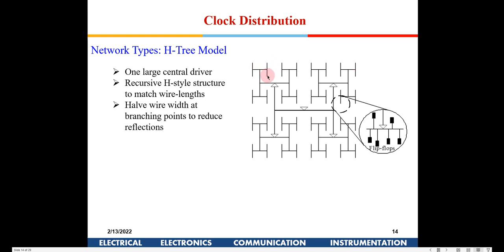Flip-flops connected to the four corners of the edge will also have equal amounts of jitter. Locally, all points — one through eight — will have the same clock skew. So this H-tree distribution feeds the clock from a central buffer through multiple levels of H structures. This is the clock routing structure — this is how the lines will go within a chip.